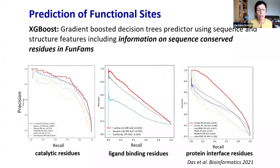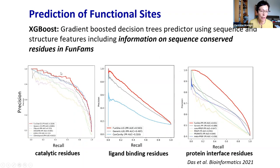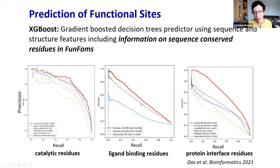If we hadn't clustered our proteins into functional families, we may have missed these conservation signals. For example, if we had merged two functional families, these positions would not be so highly conserved. There are dramatic cases where an arginine in one functional cluster may have switched to a negatively charged serine in the other. By separating and generating functional families as accurately as possible, we can get a better idea of where predicted functional sites lie. We've tried to improve functional site detection using gradient boosted decision trees, combining structure features and sequence conservation information from functional families.